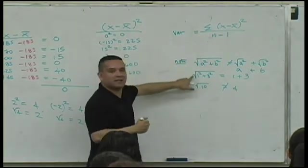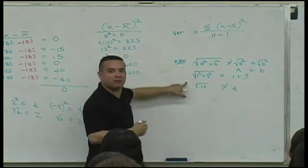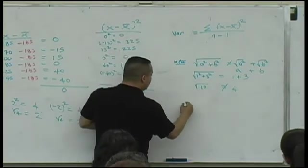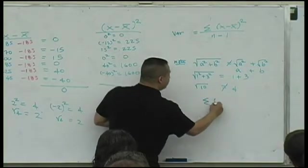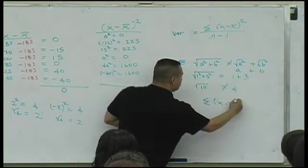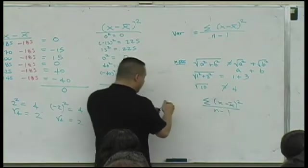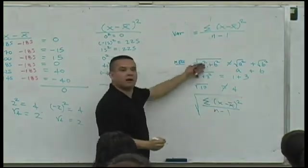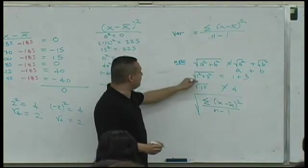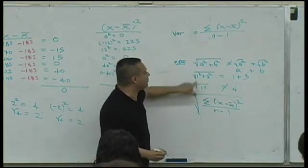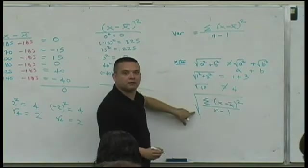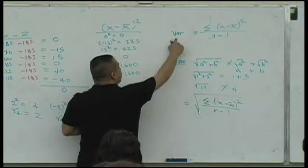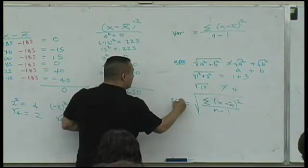The square root business that we went through and talked about is this. If I take that same formula and take the square root now, this is the essence of our argument that we just started to talk about. I didn't say it, but this is where the square root part comes in, the square root of a sum. Okay? This is where this comes in. This is now known not as variance, but as what? Standard deviation.